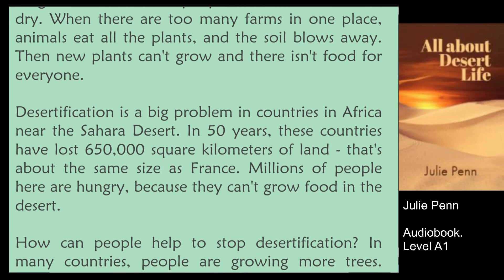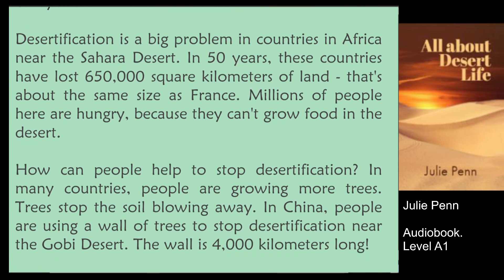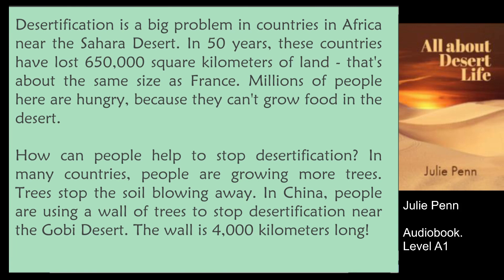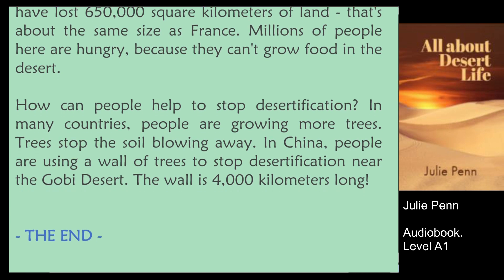Desertification is a big problem in countries in Africa near the Sahara Desert. In 50 years, these countries have lost 650,000 square kilometers of land. That's about the same size as France. Millions of people here are hungry because they can't grow food in the desert. How can people help to stop desertification? In many countries, people are growing more trees. Trees stop the soil blowing away. In China, people are using a wall of trees to stop desertification near the Gobi Desert. The wall is 4,000 kilometers long.